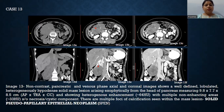Case 13 demonstrates a solid pseudo-papillary epithelial neoplasm (SPEN). There is a well-defined, lobulated, heterogeneously hypodense solid mass lesion arising exophytically from the head of the pancreas, showing heterogeneous enhancement with multiple non-enhancing areas suggestive of necrosis or cystic component. There are multiple foci of calcification seen within the lesion.